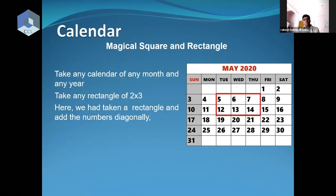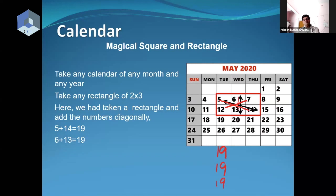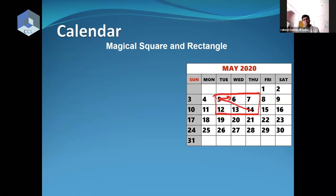Now, even if you take a rectangle, it is a magical rectangle. Let me show you: 12 plus 7 is 19, 14 plus 5 is 19, 13 plus 6 is 19. Can anyone explain why this happened? There is no middle number here. If you add one to 15 you get 16, and subtract one from 21 you get 20 — so the same total comes.